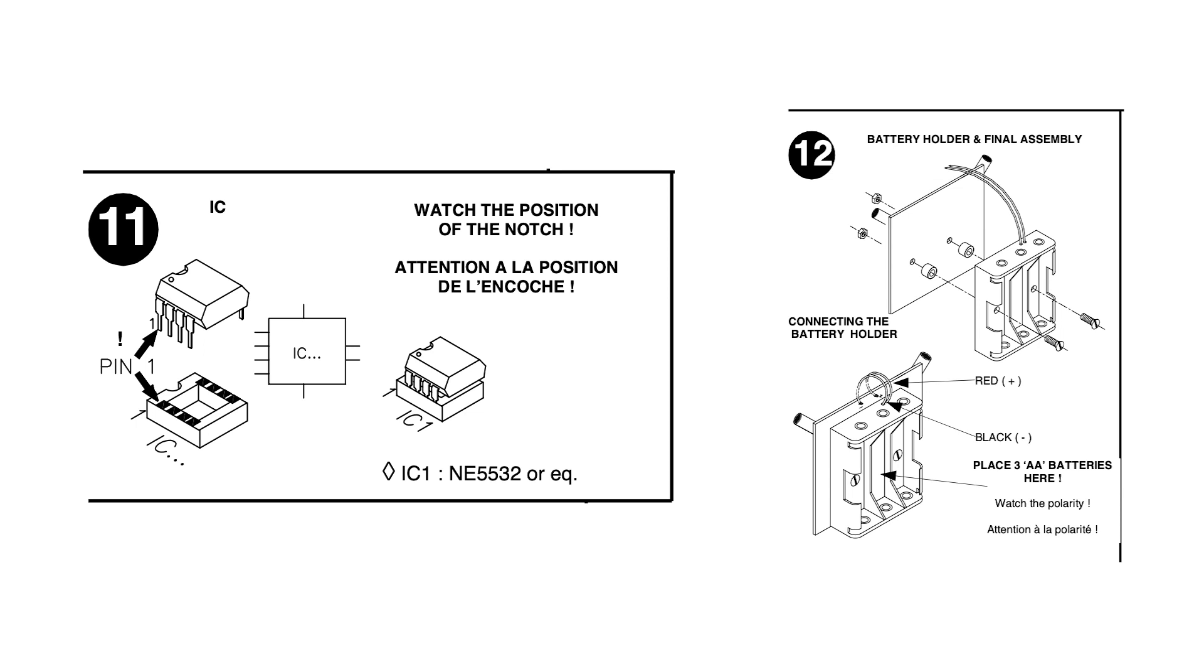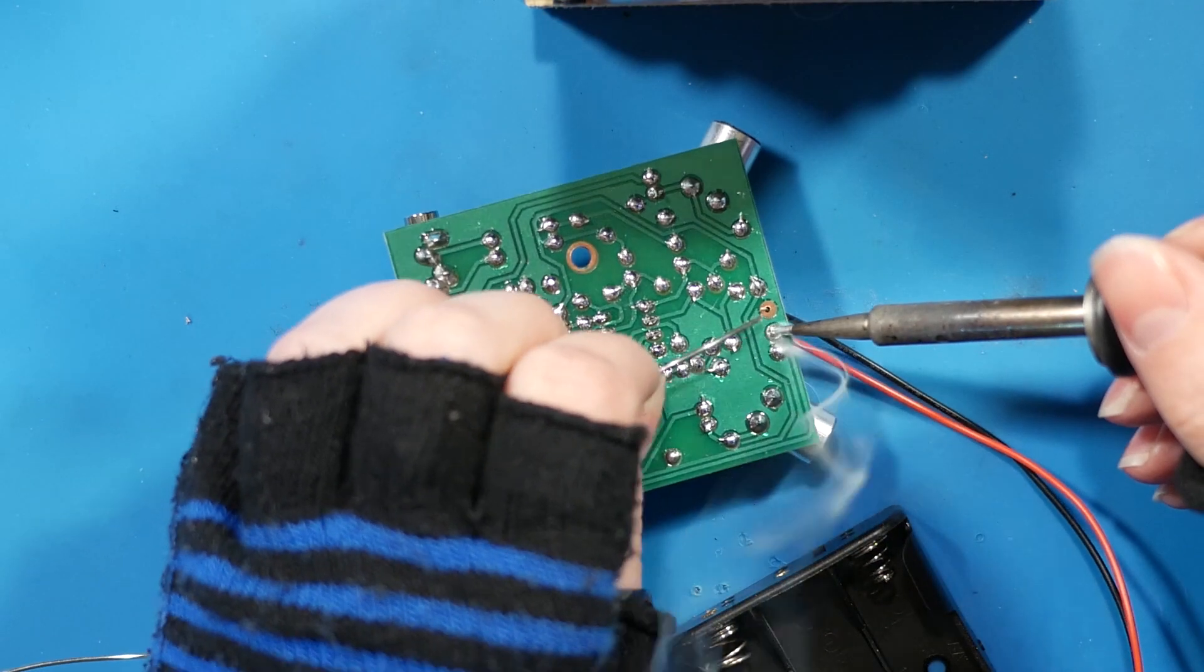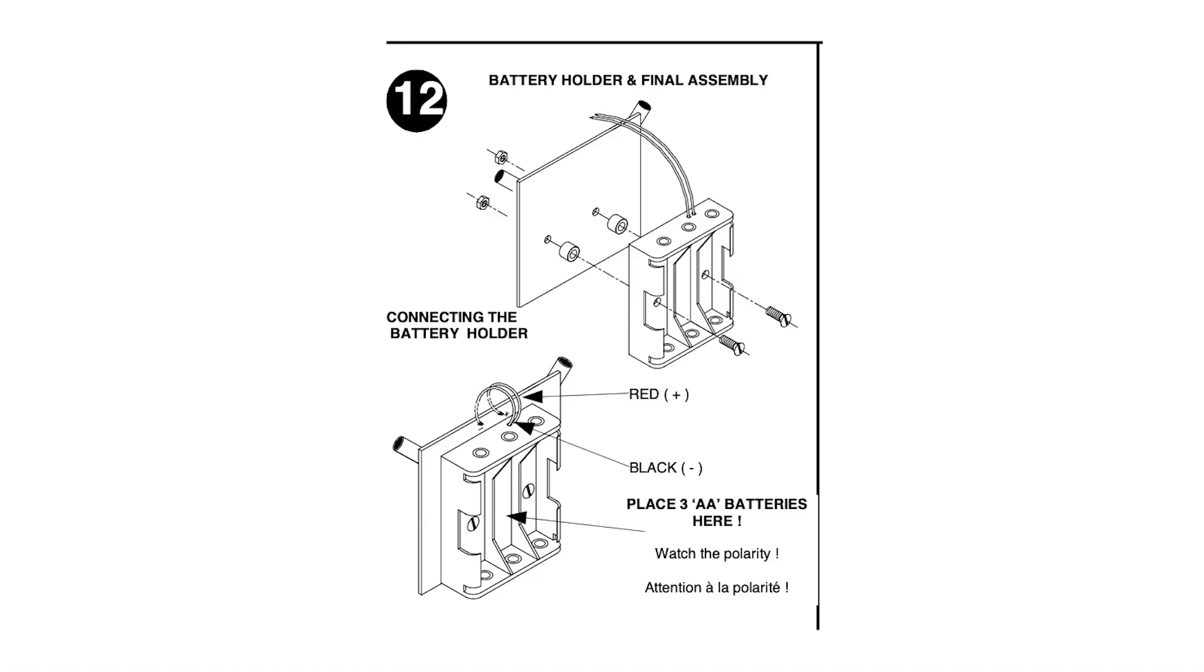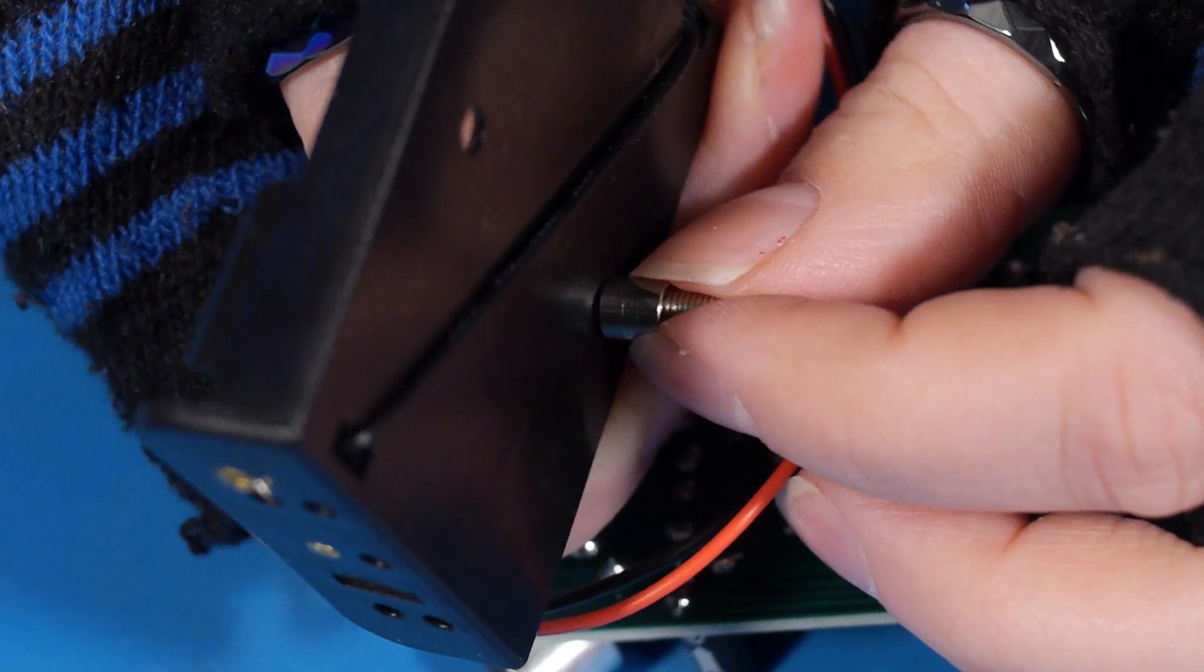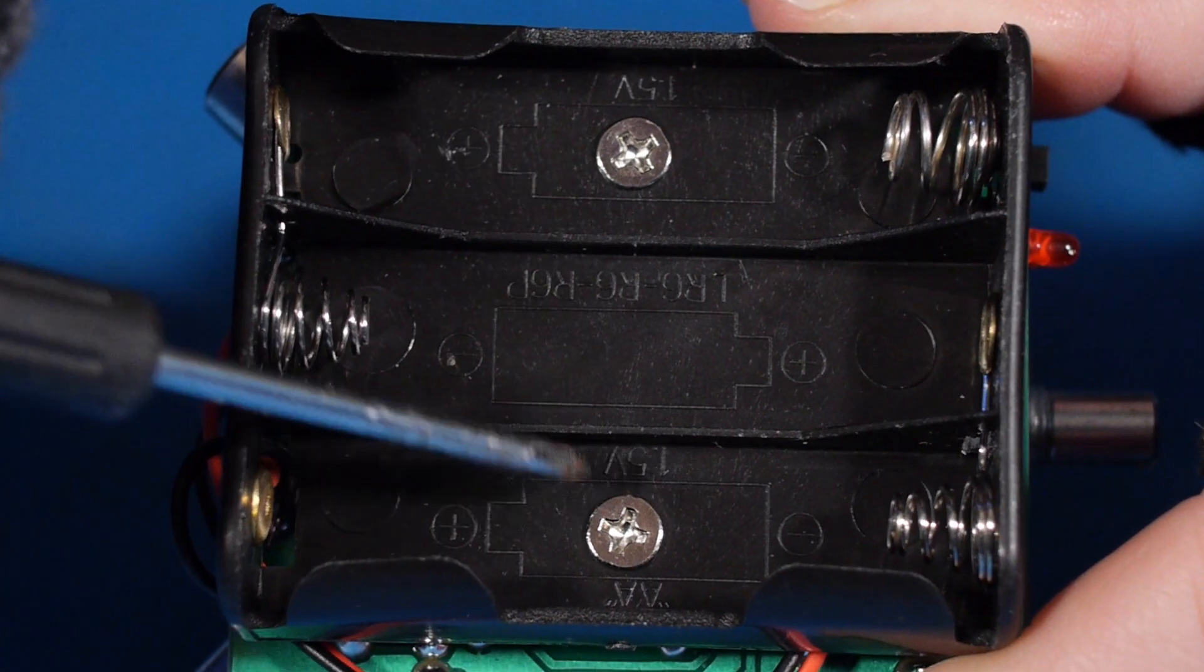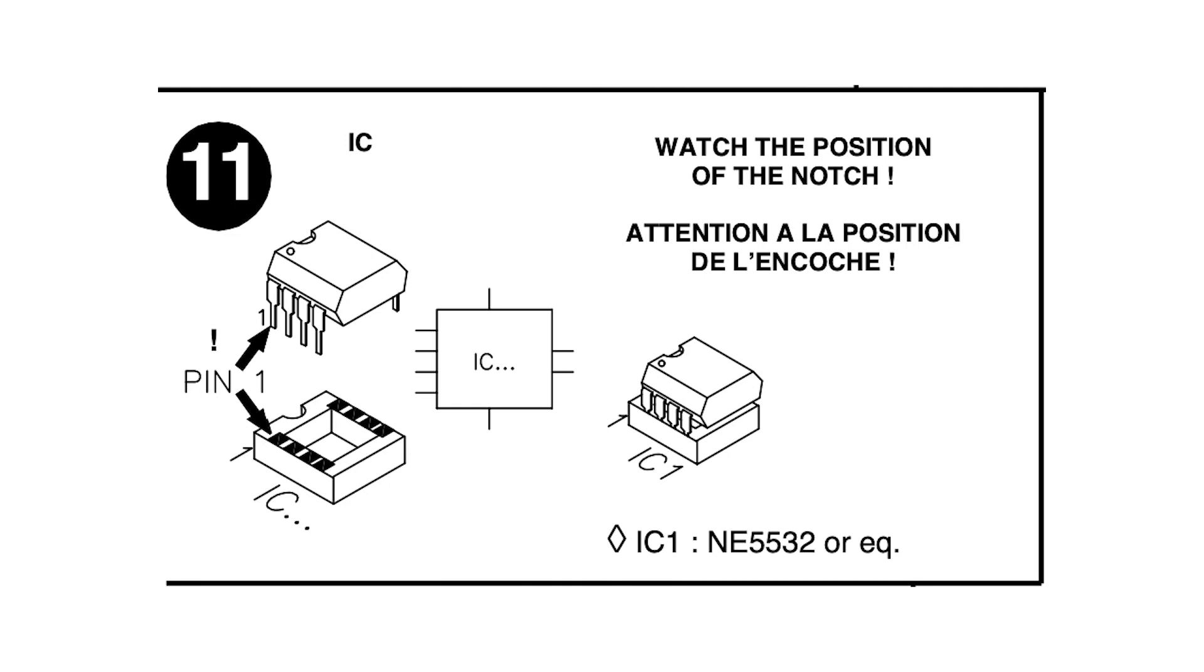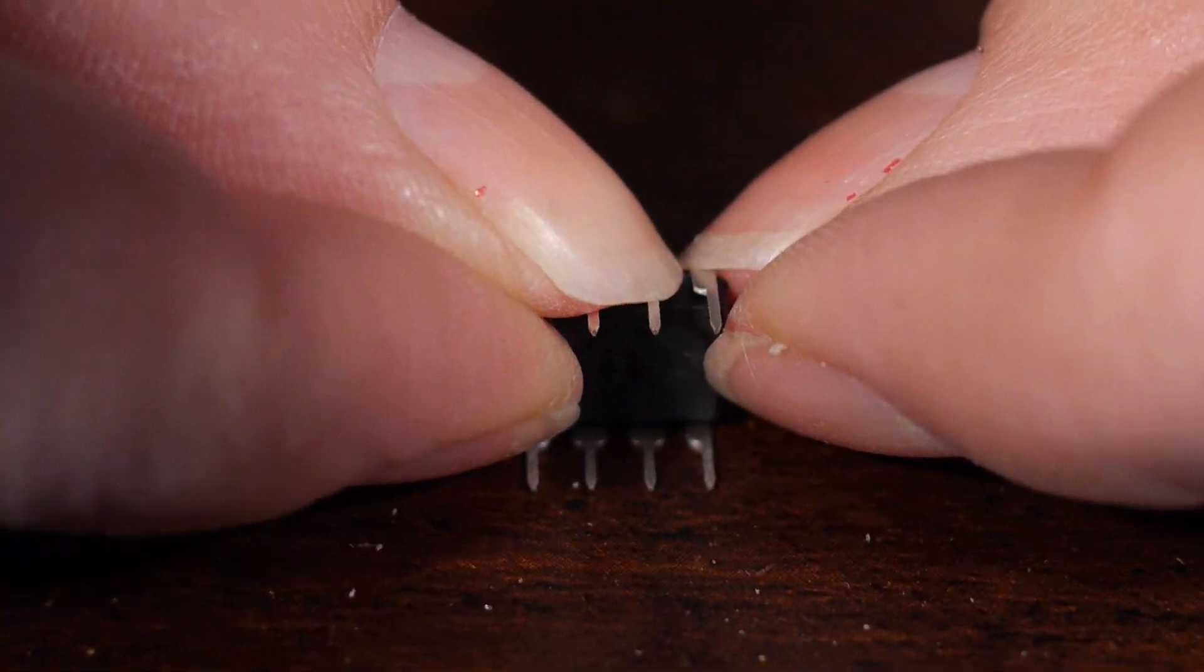I'm going to do steps 11 and 12 out of order. Step 12 is soldering and attaching the battery pack. Solder the red wire to red and the black wire to black. Next, take the screws, spacers, and nuts and use them to screw the battery pack to the back of the PCB. Tuck the wire if you want to keep it a little tidier. Last, place the op amp IC into the socket. Bending all the pins using the surface of the table will help align them with the holes in the socket.